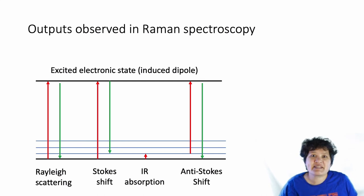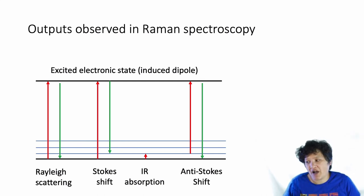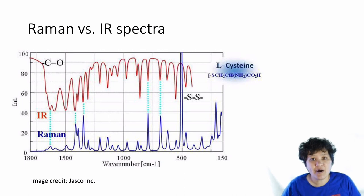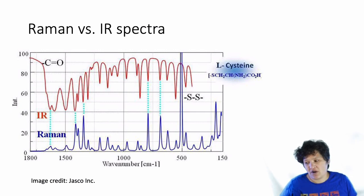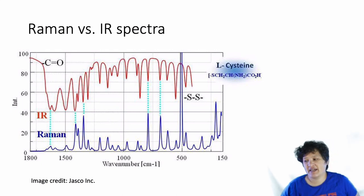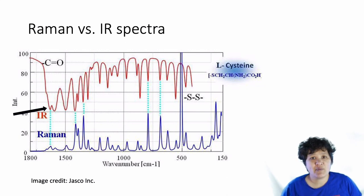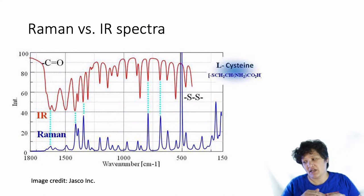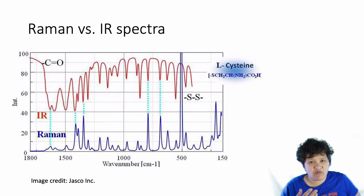Looking at the Stokes shift in particular, the change in energy is the same as infrared absorption going up to that first vibrational state. So these Raman peaks tend to correspond with infrared absorption peaks — it's a very complementary technique to infrared. You can see this on the spectrum showing both infrared and Raman spectroscopy of L-cysteine, where those peaks correlate to each other at the same wave number. Notably, if you look at the peak for the C double bond O — the carbonyl in L-cysteine — in IR we have a very strong peak, but in Raman we have a weak peak. Think about why that would be the case as a reading question.